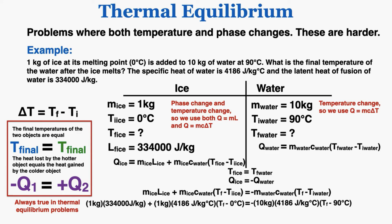Doing the math to isolate T_final gives a final temperature of 74.6 degrees Celsius. So if you take one kilogram of ice at zero degrees Celsius and drop it into 10 kilograms of water at 90 degrees Celsius and allow the ice to completely melt, the water will reach a final temperature of 74.6 degrees Celsius. That's how you do a thermal equilibrium problem when dealing with both a temperature and a phase change.